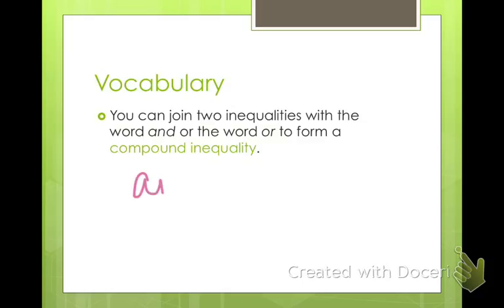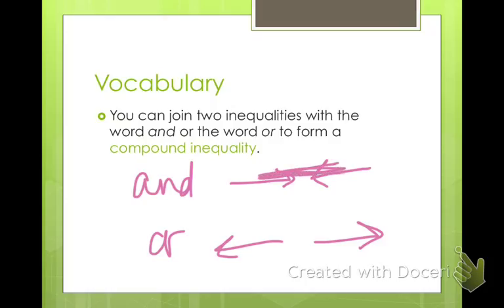And inequalities always point towards each other, or inequalities always point away from each other. So and is going to have an overlap that's true, whereas or is going to have a section that does not fit the solution set.